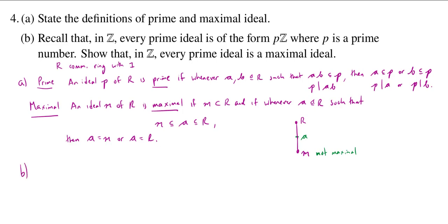How about B? Let's see, it says, recall that in Z, the integers, every prime ideal is of the form PZ, where P is a prime number. Hey, that's kind of convenient, right? This is actually not 100% true.